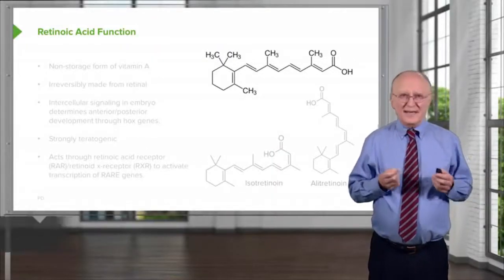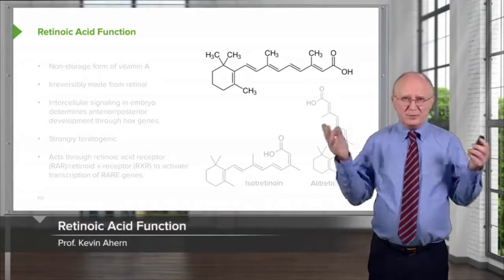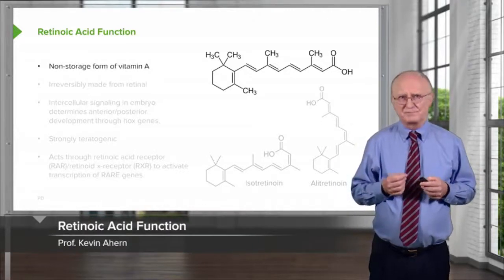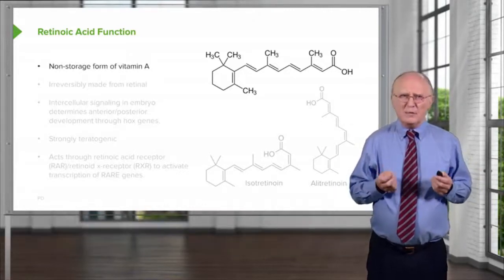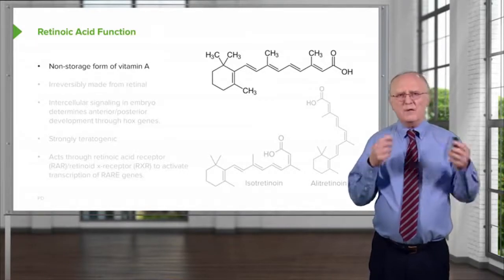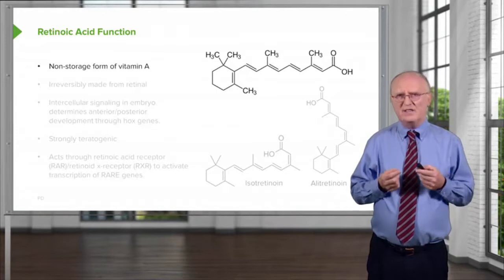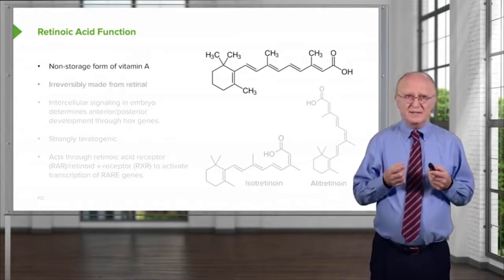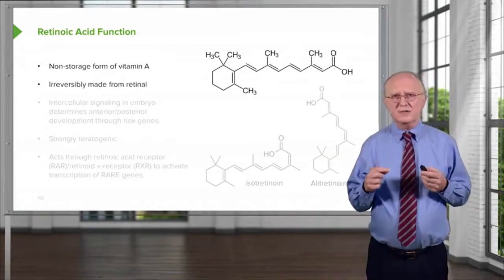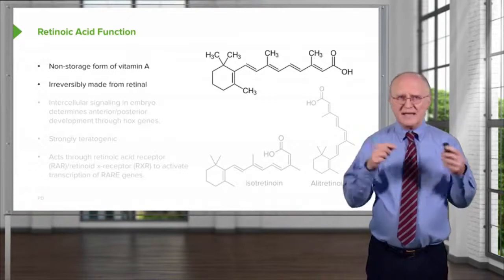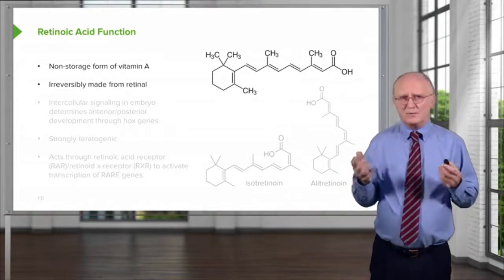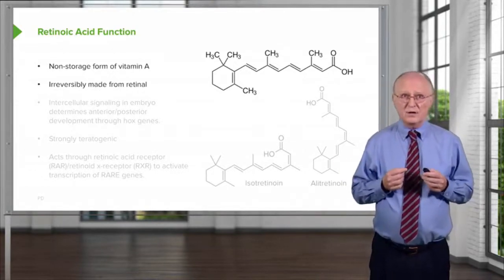Now another form of vitamin A is retinoic acid, and it has a function that's completely different from that in vision. First of all, the retinoic acid is created from the retinal by an oxidation reaction. This oxidation reaction that creates retinoic acid is non-reversible. That is, we can't make retinoic acid back into retinal. So it's for this reason we call it a non-storage form of vitamin A.